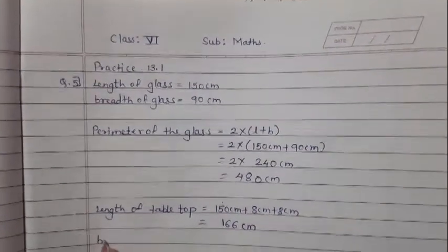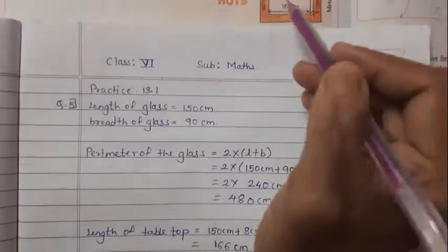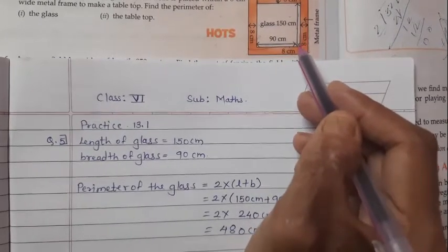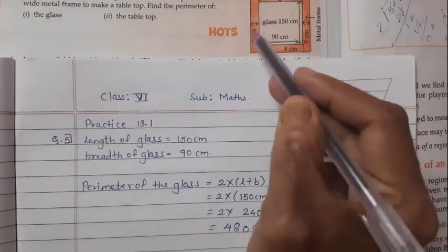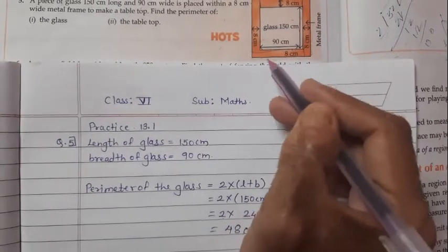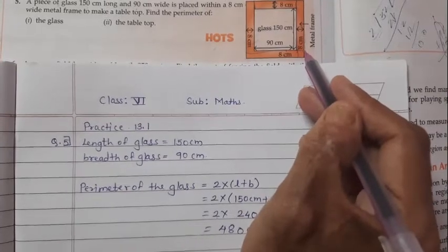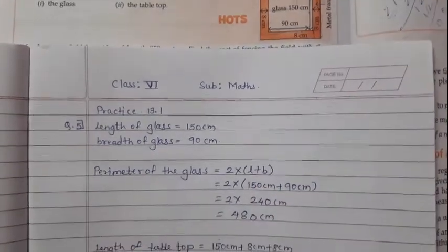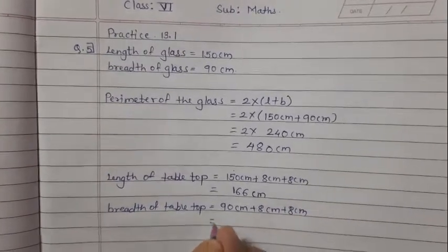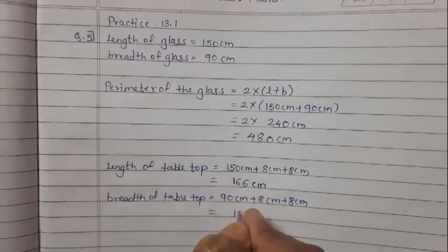Now the breadth of the table top. The breadth of the glass is 90 cm. Adding 8 cm from both sides: 90 plus 8 plus 8. So 8 plus 8 is 16, carry 1; 9 plus 1 is 10. So the breadth of the table top is 106 cm.